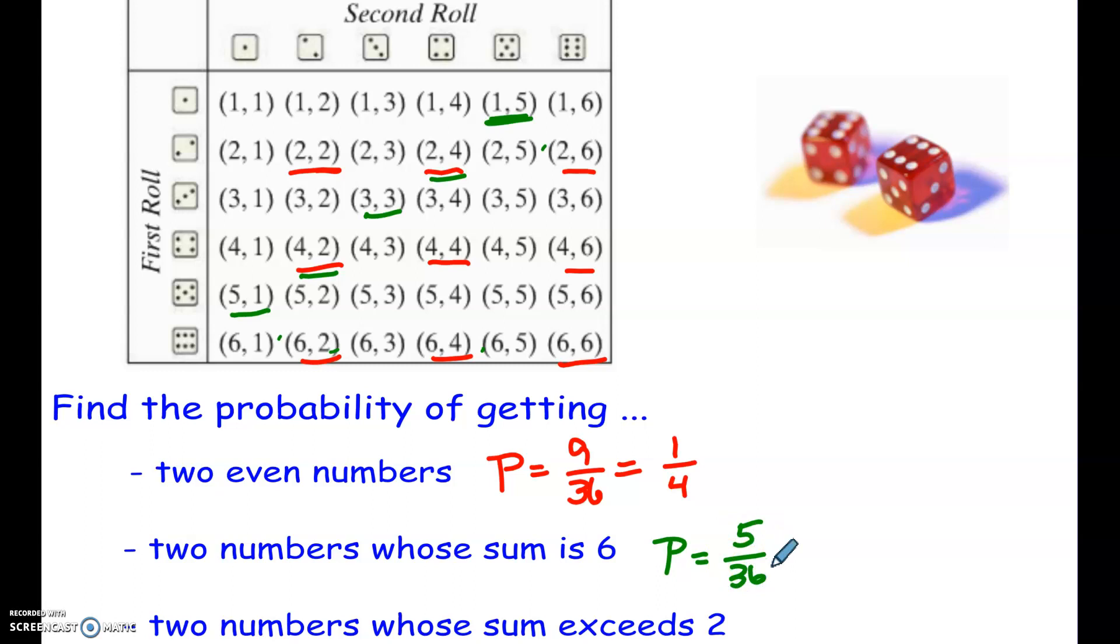Now what about this next one? It says two numbers whose sum exceeds 2. The sum exceeds. So that means it has to be more. It has to be at least 3, right? So 1, 1 is equal to 2. Any other pair here is going to be more than that. So it's all the ones outside of the 1, 1. That means there's 35. So my probability here would be 35 of the 36.